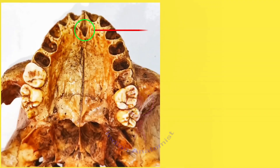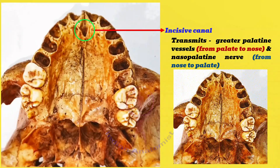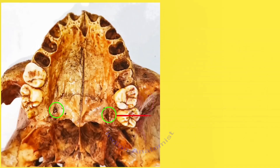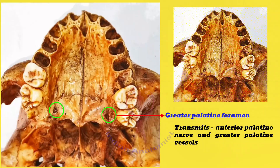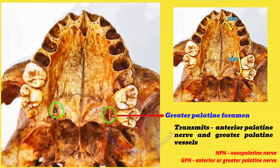The canals and foramina of the hard palate: The incisive canal transmits the greater palatine vessels from the palate to the nose and the nasopalatine nerve from the nose to the palate. The greater palatine foramen is present just anterior to the posterior border of the hard palate. It transmits the anterior palatine nerve and greater palatine vessels. The anterior palatine nerve runs along a groove on the lateral border of the hard palate, where it anastomoses with the nasopalatine nerve exiting the incisive canal.